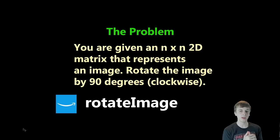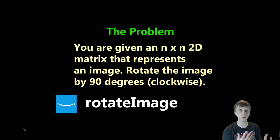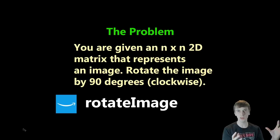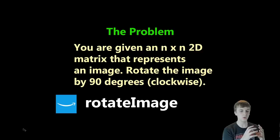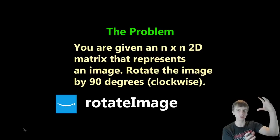So we understand our input now. We're given this n by n 2D matrix, 2D array, or image in this case. What is the objective? What are we going to be asked to do? If this was Amazon, the interviewer is going to say hey, this is your input — now do something with it. What we're going to do is we're going to have to rotate this image 90 degrees clockwise. So we're going to take our n by n 2D array and rotate that whole thing 90 degrees clockwise.